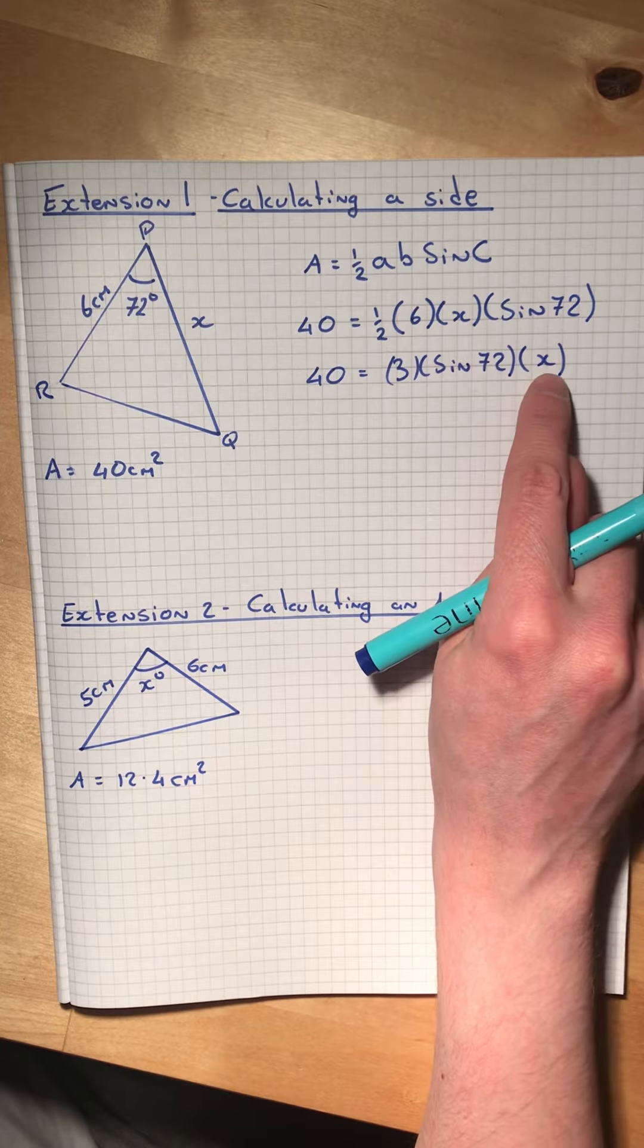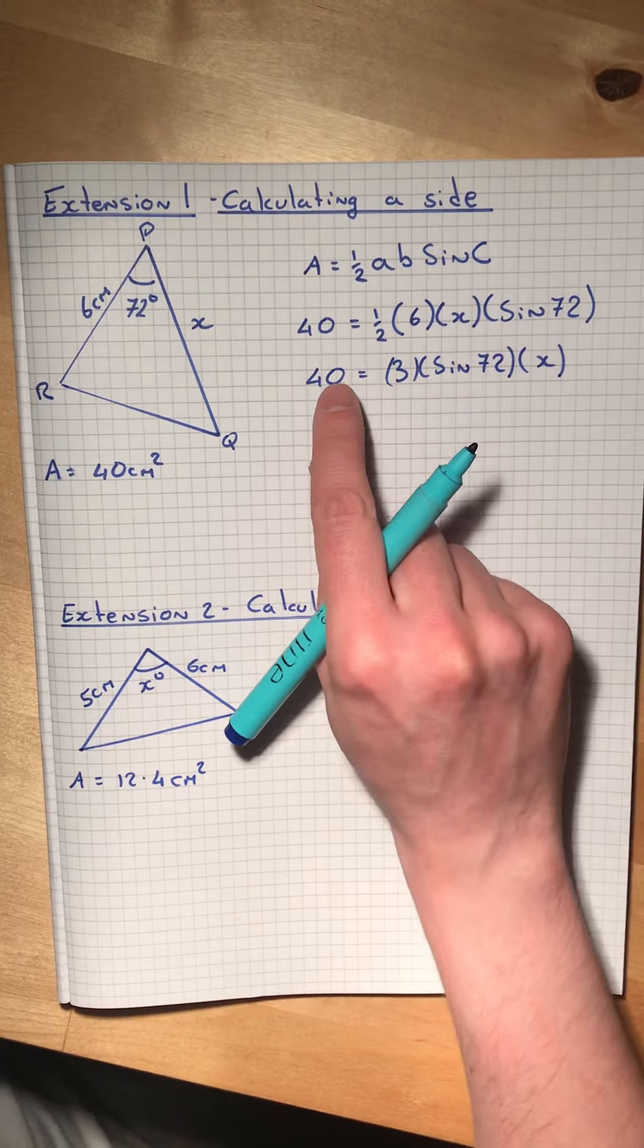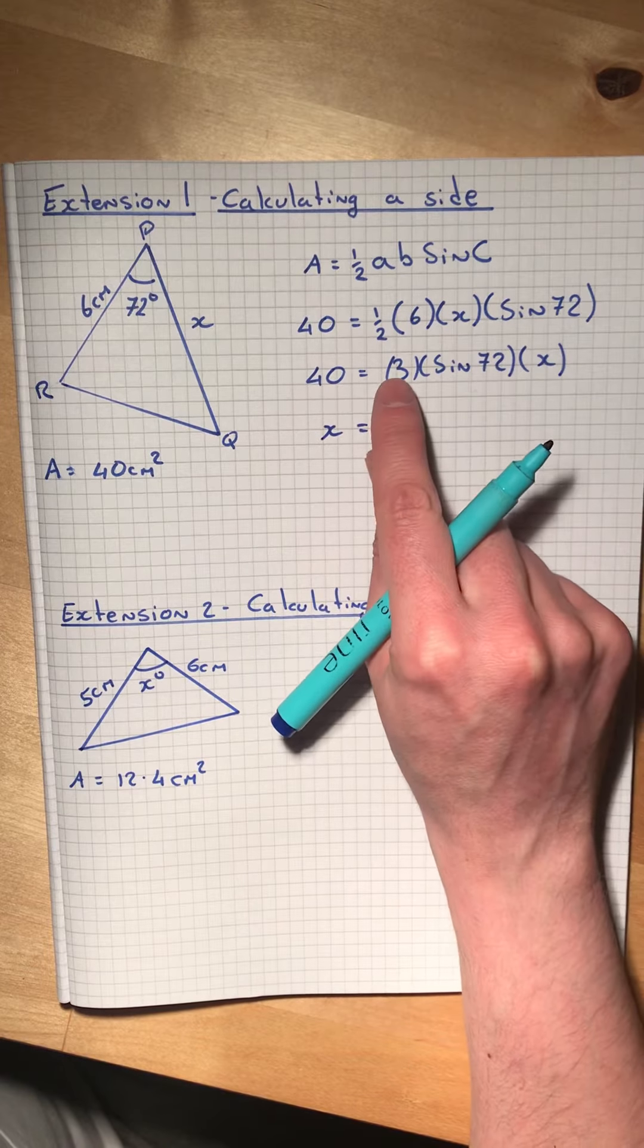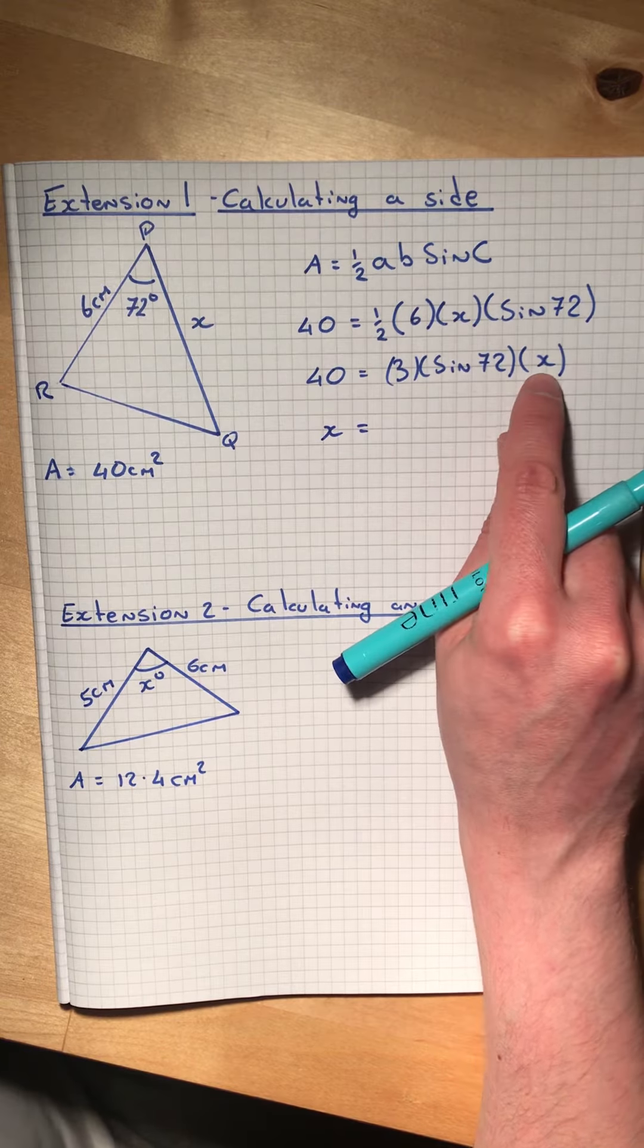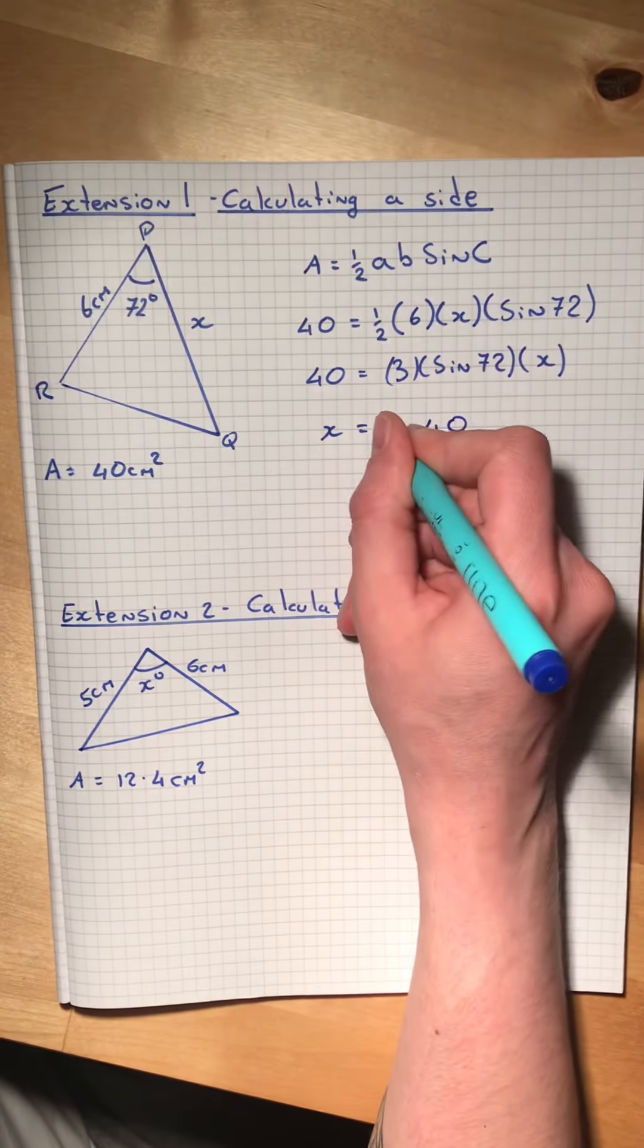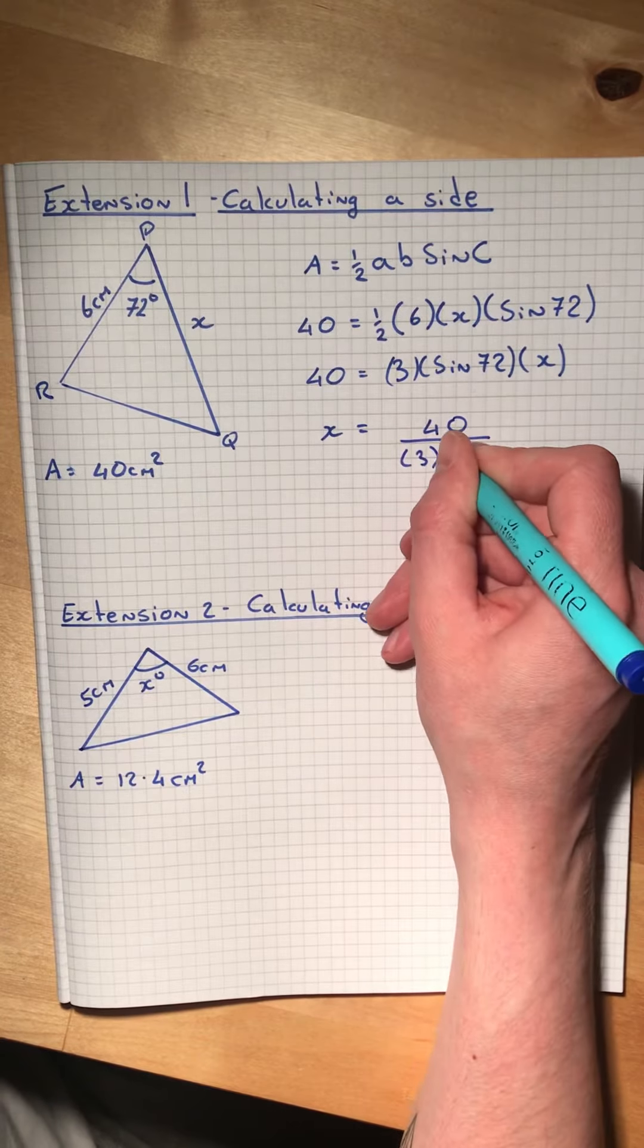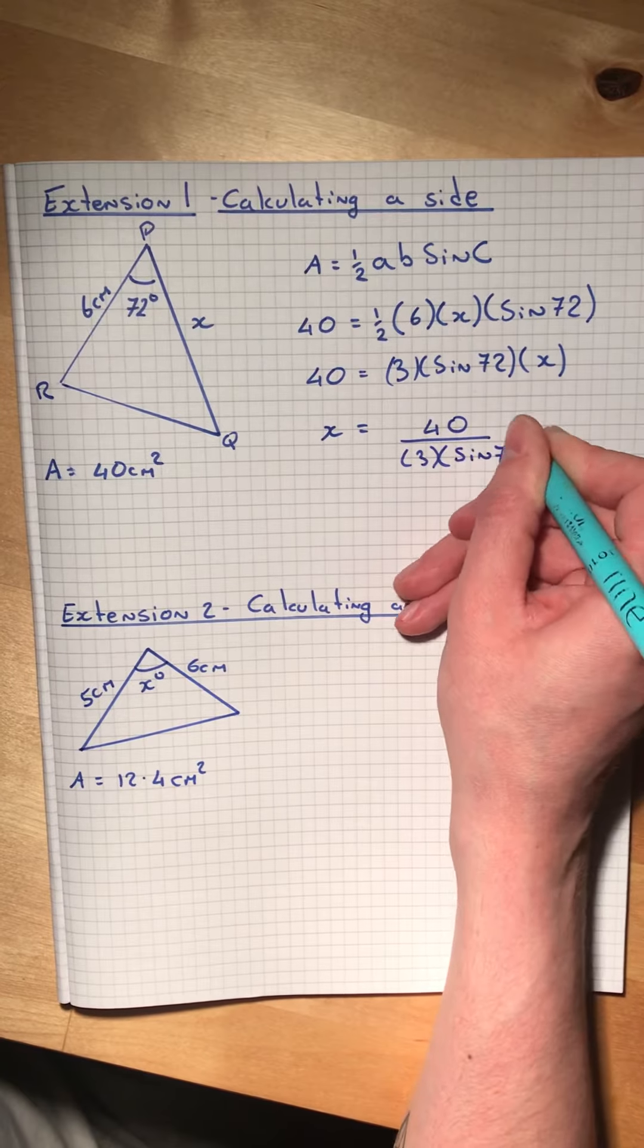And what we can now do is rearrange that to be x equals... So if 40 equals 3 times sine 72 times x, that means x equals 40 divided by 3 times sine 72.